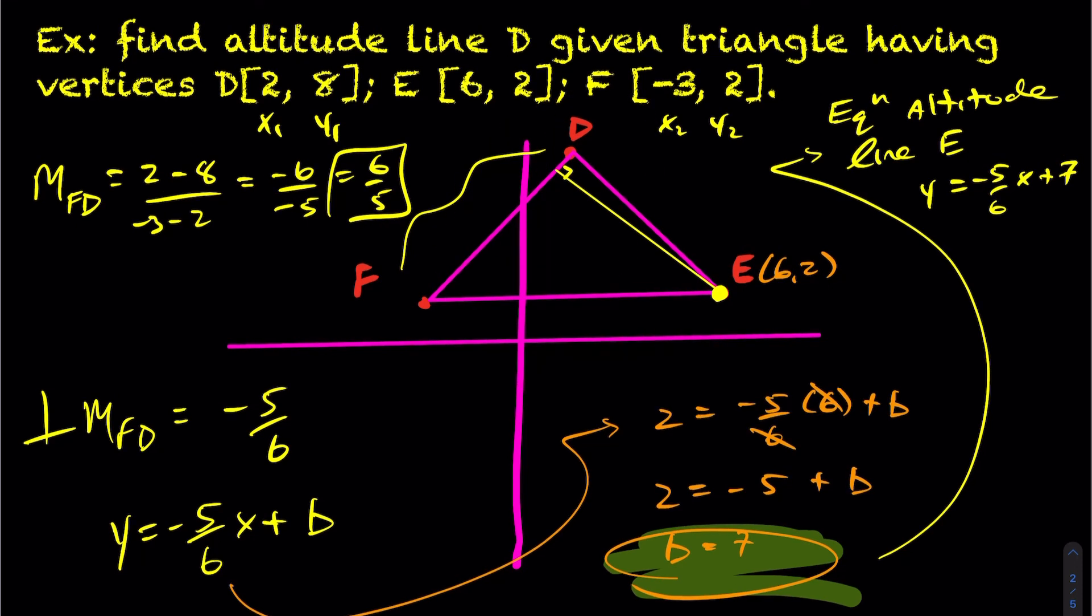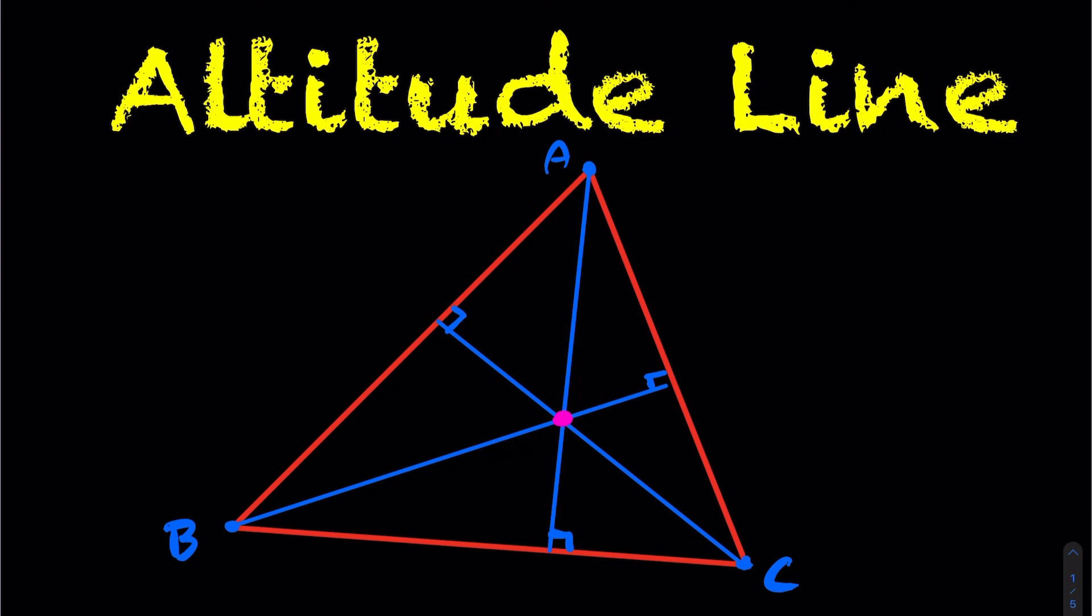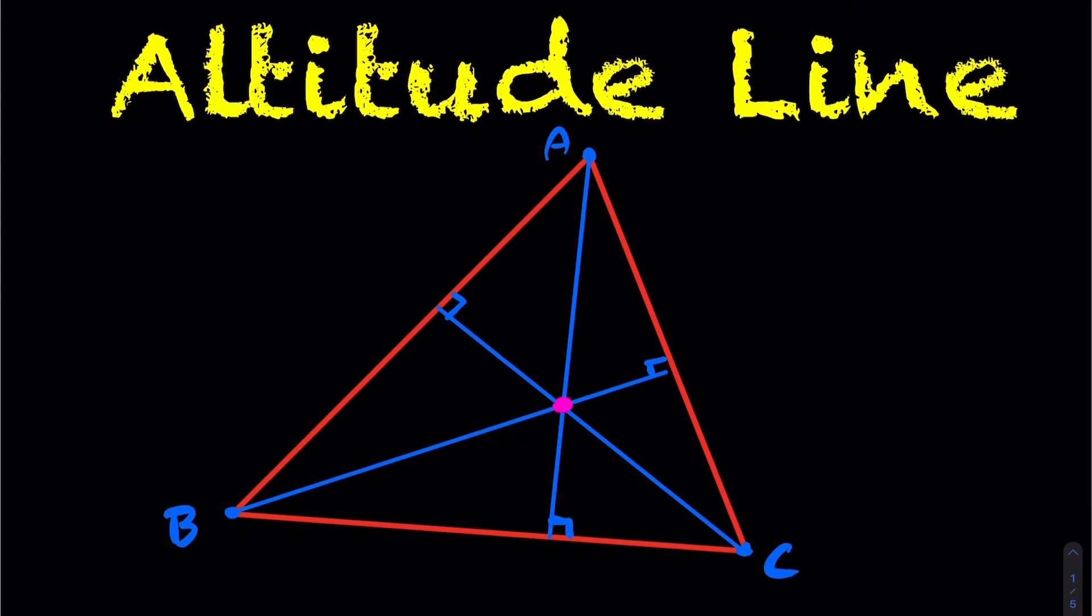Okay, so this concludes altitude lines here. Remember, the altitude line of your triangle is just the height of the triangle. So again, when we intersect those altitude lines, you have what's called your orthocenter, as we discussed. And check out a video, I'll link it here. You can check out working with the orthocenter. Thank you.